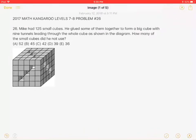This is the 2017 Math Kangaroo levels 7 and 8, problem number 26. Mike had 125 small cubes. He glued some of them together to form a big cube with 9 tunnels leading through the whole cube as shown in the diagram. How many of the small cubes did he not use?